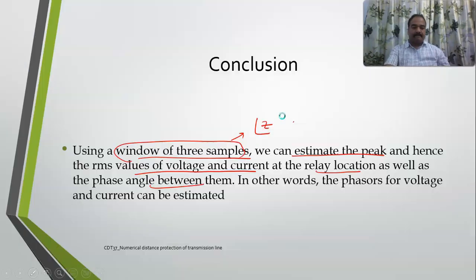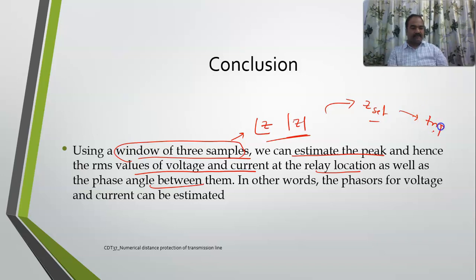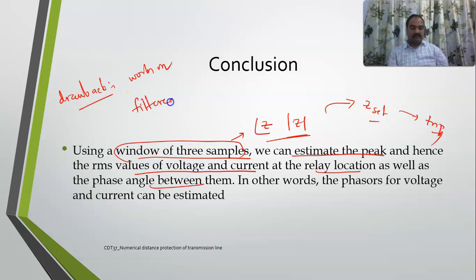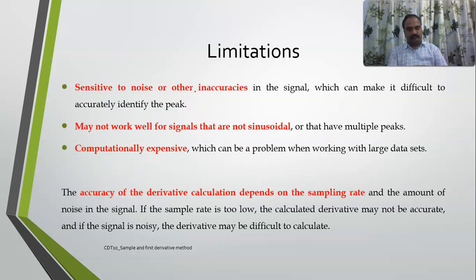Just a window of three samples is enough to calculate |Z| and the phase angle. Once calculated, you compare with Z_set and issue a trip signal. This is the easiest method, but the drawback is it works only on filtered signals. In real power systems there are many harmonics present, so this method is not widely applicable. Limitations: it is sensitive to harmonics, may not work well with non-sinusoidal signals, and can be computationally expensive for large data sets.